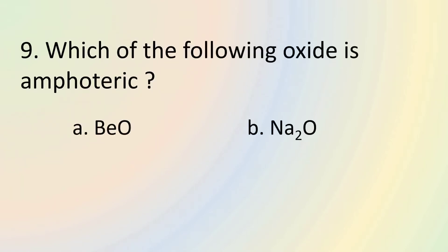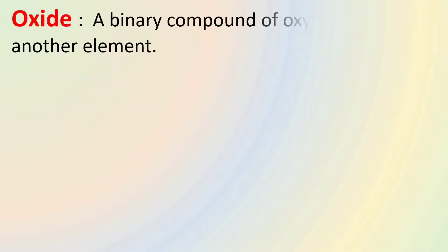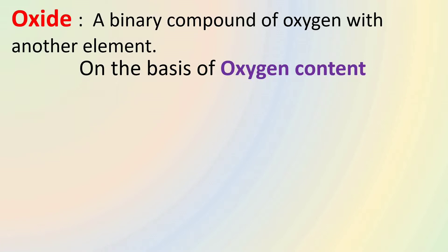Q9 asks us to identify an amphoteric oxide. Among the given options, beryllium oxide is an amphoteric oxide. Na2O, MgO, FeO are metallic oxides. They are basic oxides. Oxides refers to a binary compound of oxygen with another element.